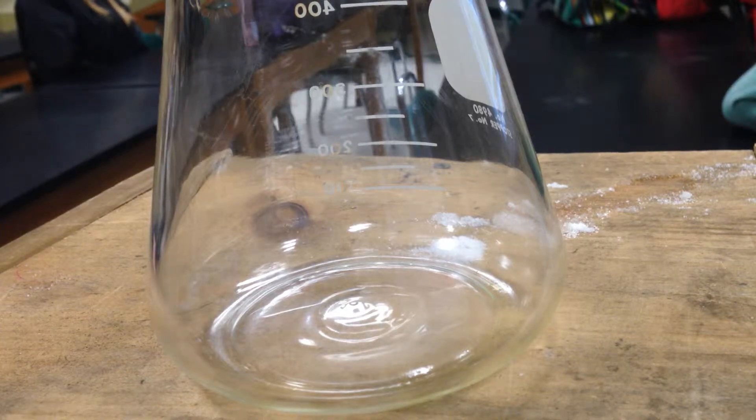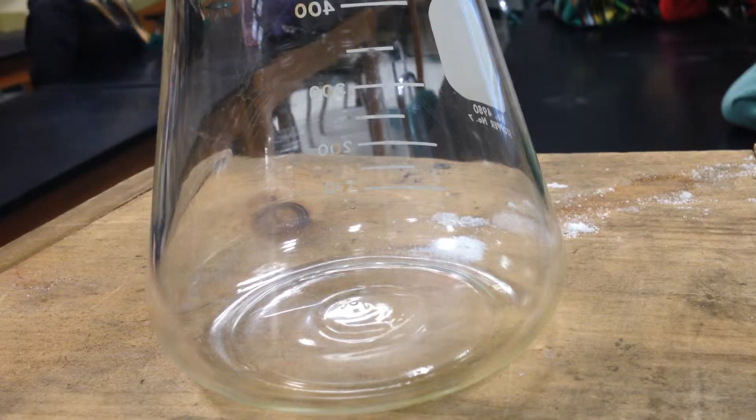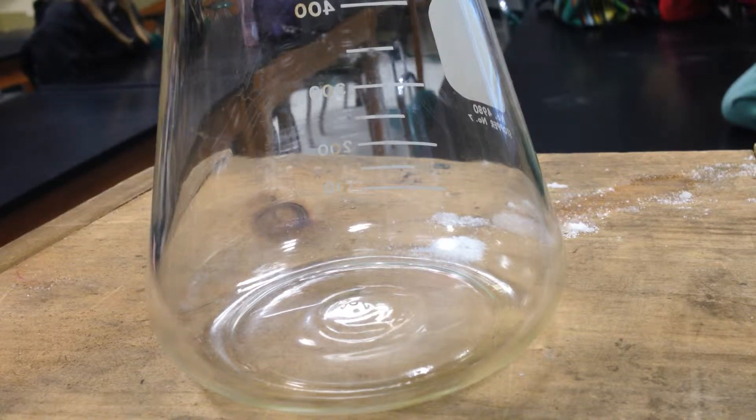All right, so this is a demonstration of changing the ligand on a copper ion. We have complex ions we're going to make today. Our ion that we're using is copper plus two.